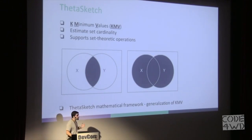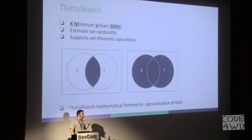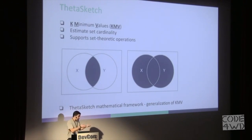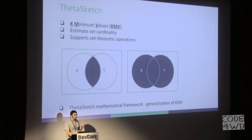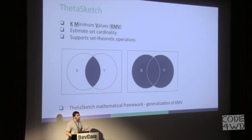There also exists a third approach, which is to use an approximation algorithm. The main difference is that instead of calculating the exact number, you calculate a number that is close enough to the exact number. A good algorithm should minimize the error as much as possible. One such algorithm is called KMV — K Minimum Values. The idea is that we can estimate set cardinality, or the number of unique elements in a set, without storing all the elements. We can store just a sample of the elements and then estimate the real cardinality. The sample size is K, a constant, and minimum values refers to the process of selecting elements for the sample.